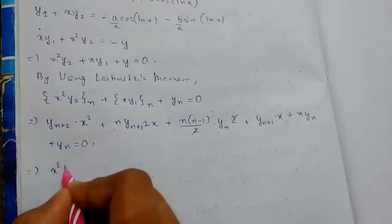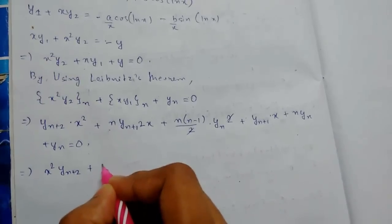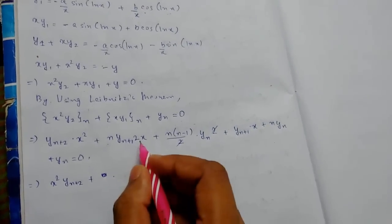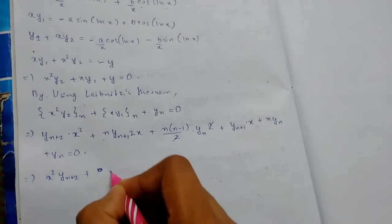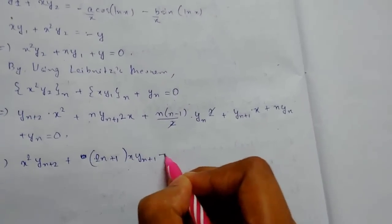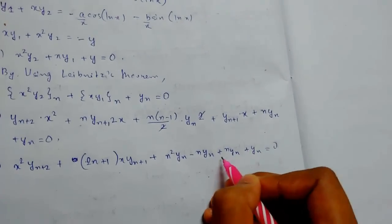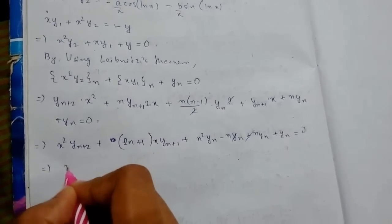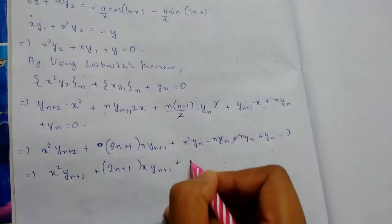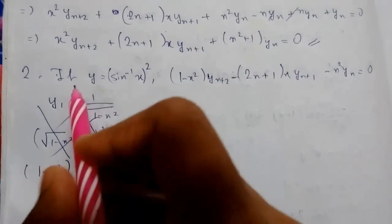Arranging all terms properly: x²·y_{n+2} + 2n·x·y_{n+1} + n(n−1)·y_n + x·y_{n+1} + n·y_n + y_n = 0. Collecting y_{n+1} terms gives (2n+1)·x·y_{n+1}, and collecting y_n terms gives (n²+1)·y_n. Thus x²·y_{n+2} + (2n+1)·x·y_{n+1} + (n²+1)·y_n = 0, which is what we had to prove.